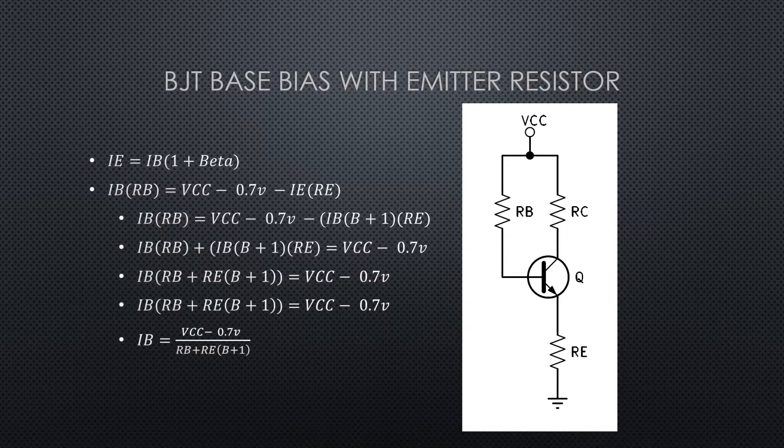Now I've got IE in terms of IB. I can circle back to my earlier Kirchhoff loop equation where I had two unknown currents, IB and IE. I'll substitute IE equals IB times beta plus one for the IE. You can see the new equation: IB times RB equals VCC minus 0.7 volts minus IB times beta plus one times RE.